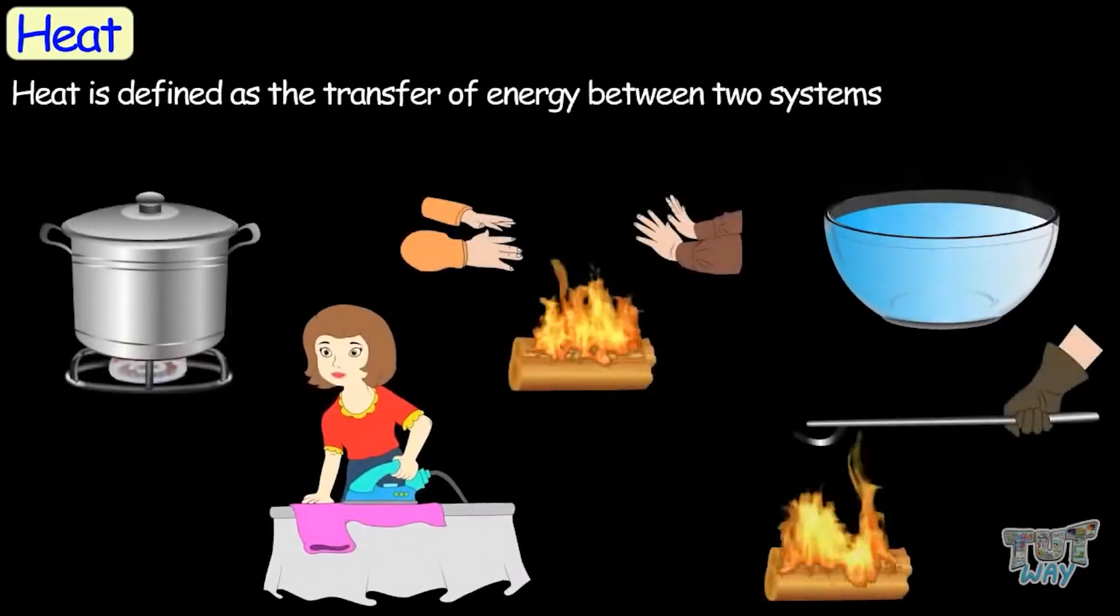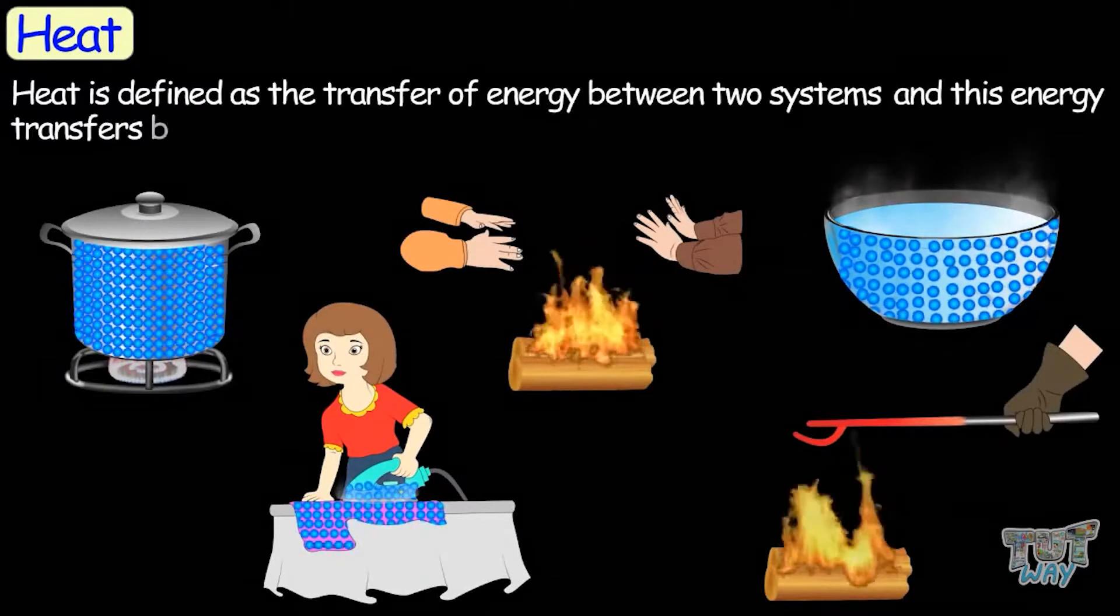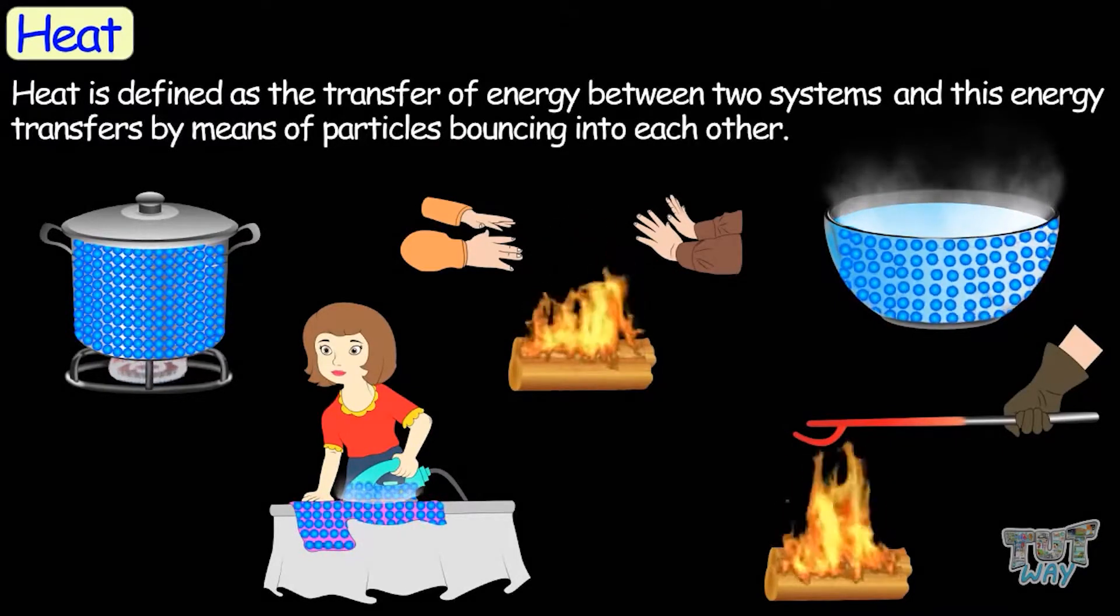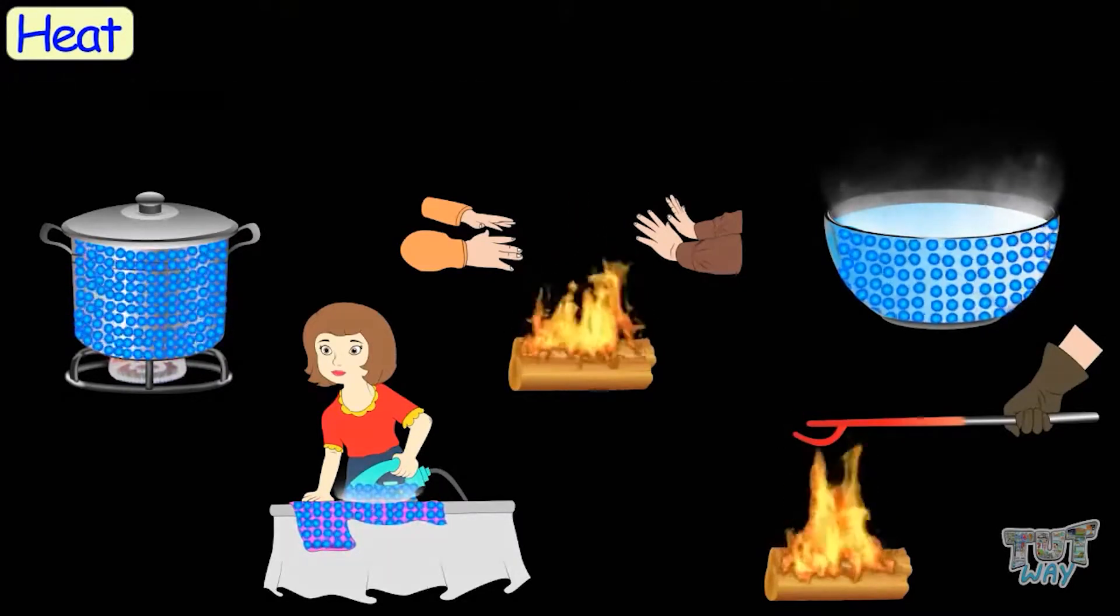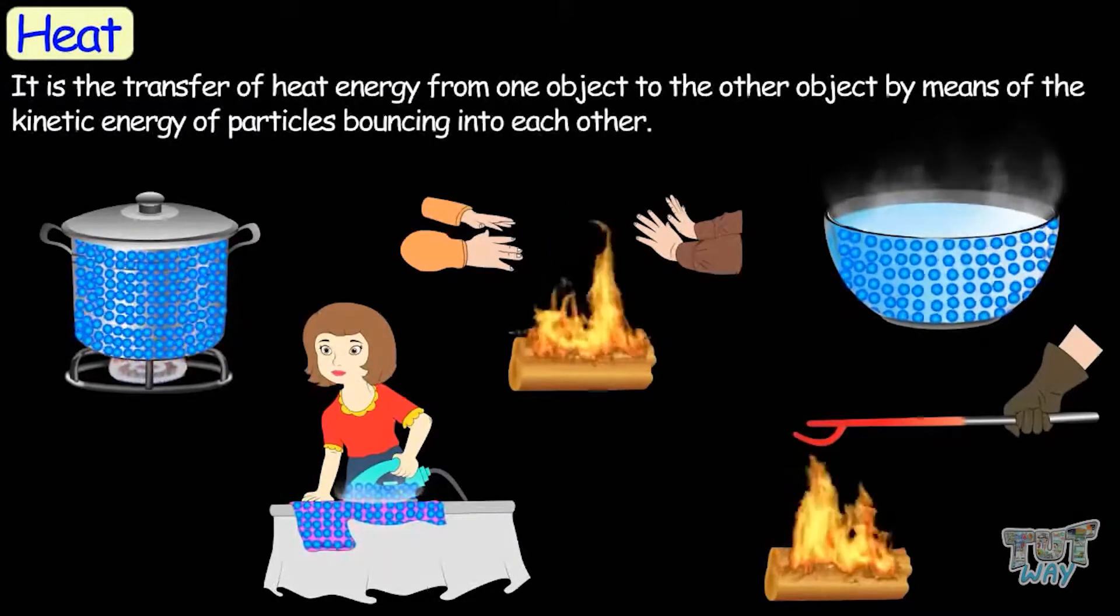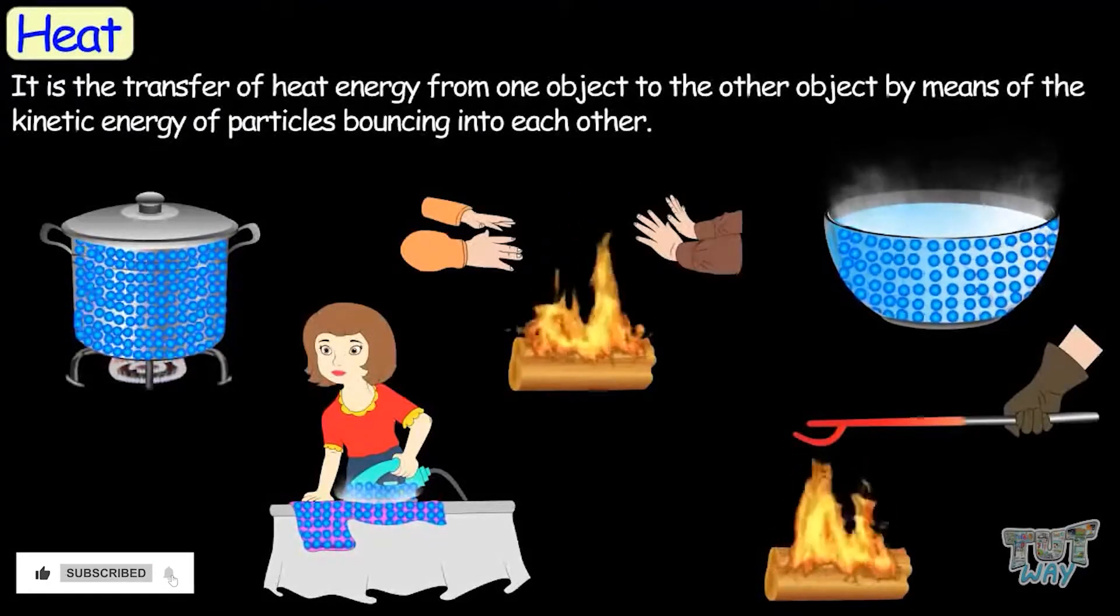Heat is defined as the transfer of energy between two systems, and this energy transfers by means of particles bouncing into each other. So we can say it is the transfer of heat energy from one object to the other by means of the kinetic energy of particles bouncing into each other.